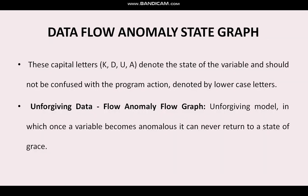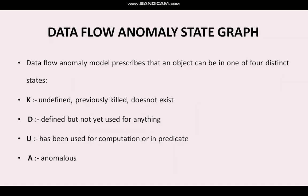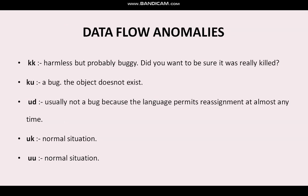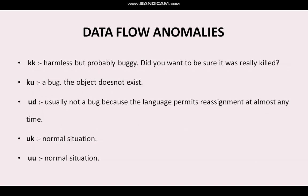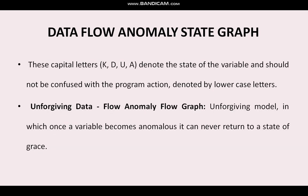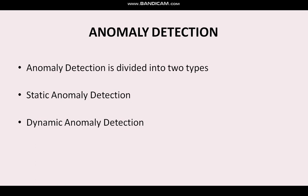So what is an anomaly actually? An anomaly is nothing but it can be denoted by some two different actions, represented by a two-character sequence of actions. The anomaly is nothing but the two-character sequence of actions. So, what are the various kinds of anomalies we have already seen in our previous videos, and the two types of data flow anomaly state graphs — forgiving and unforgiving — we have also completed. Now, how an anomaly can be detected is what we are going to see.